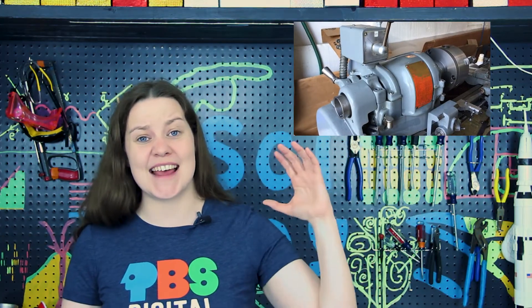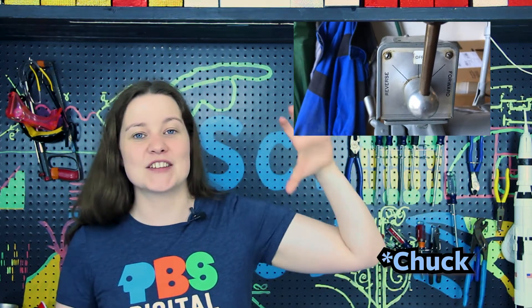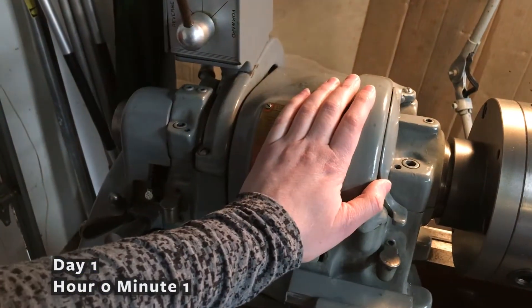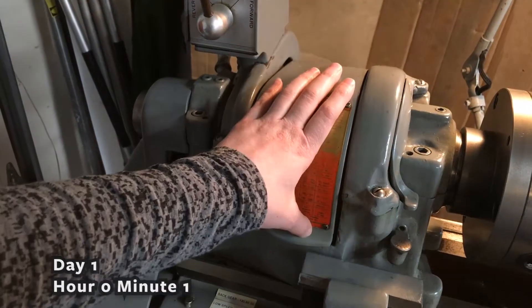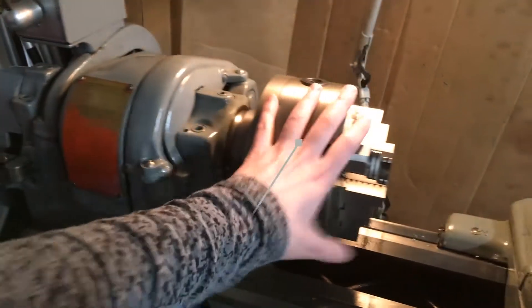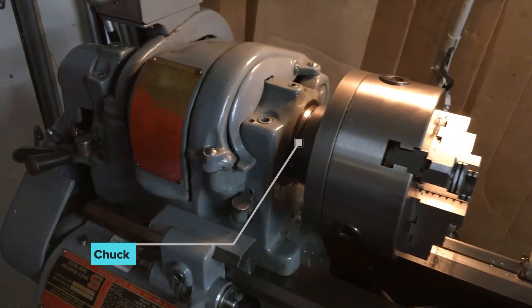At the very front of the machine is the headstock. That's where the spindle is, and the spindle attaches to the part and spins around. It spins because it's attached to gears and pulleys. The whole point of a lathe is that it turns this part and whatever piece is inside of it.